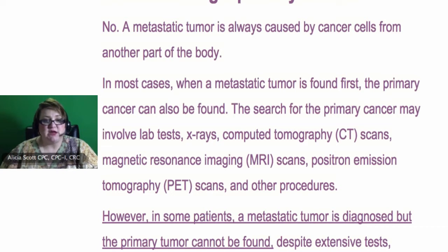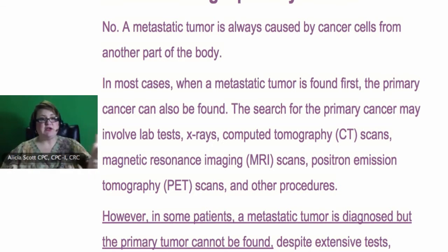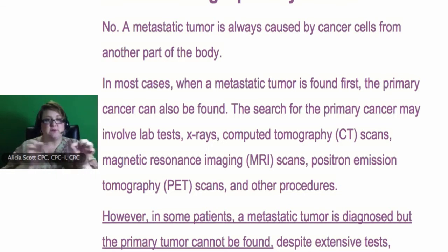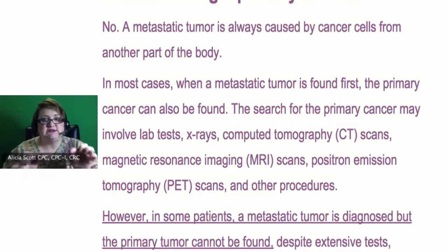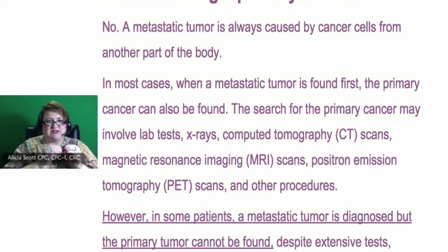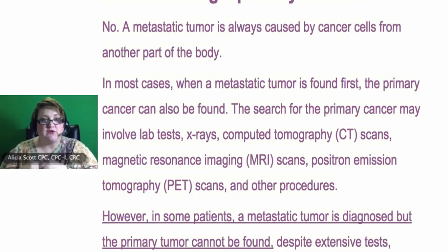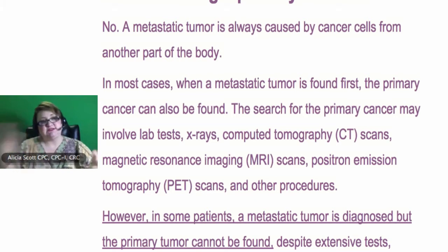It goes on to say, when that metastatic tumor is found first, the primary cancer can also be found because they'll look under the microscope and say this is breast tissue — breast cells, cancer cells in the bone. The primary site would be the breast and the secondary site would be the bone.